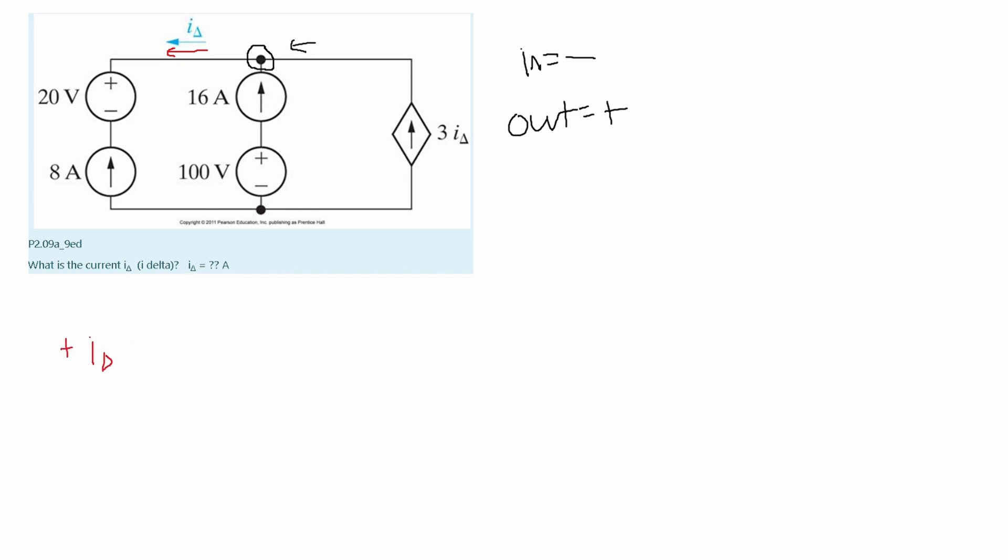Next we're going to look at the next one. We'll do this one in blue. We look at the 16 amp one. So we're going to look at the one that's going into our node. Since it's going into our node it's going to be negative. So we're going to have a negative 16 amperes.